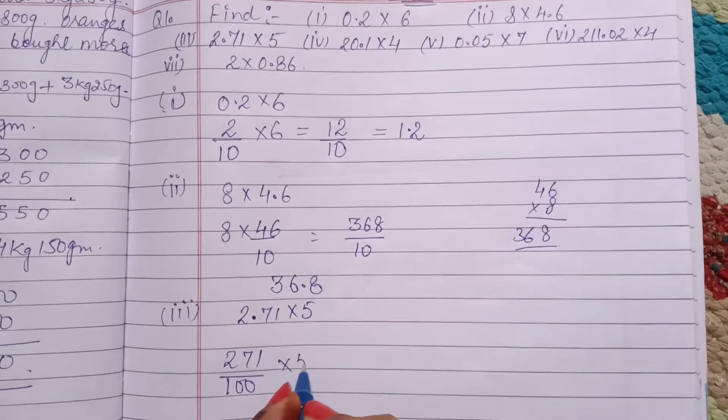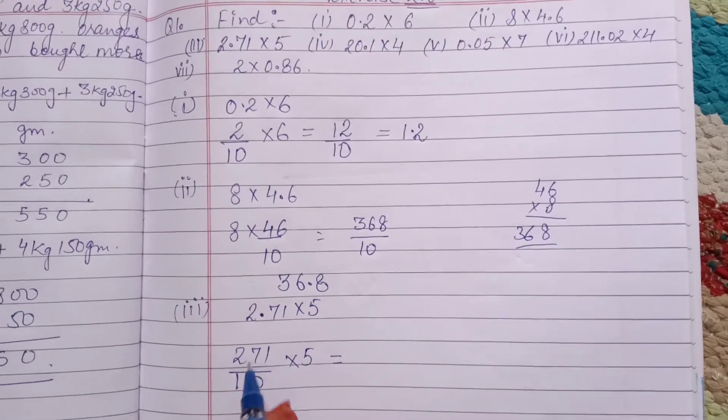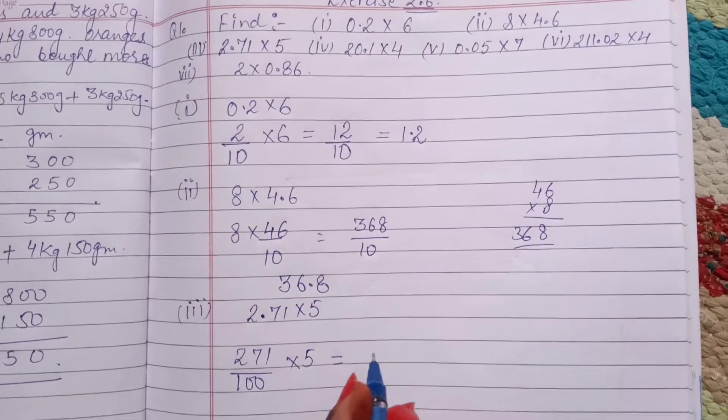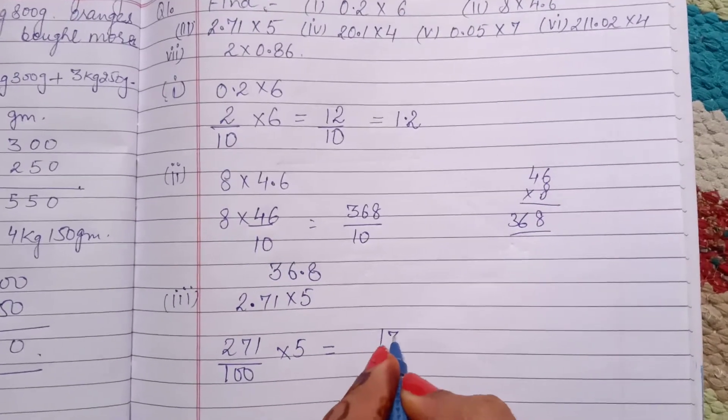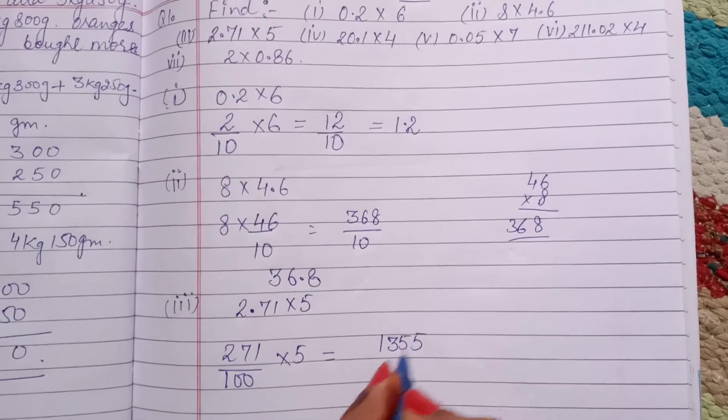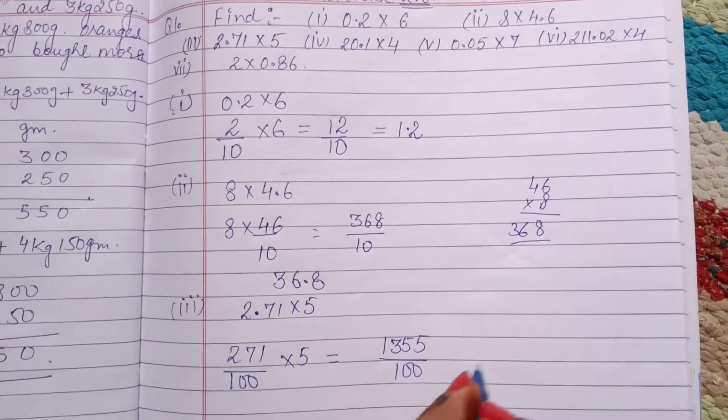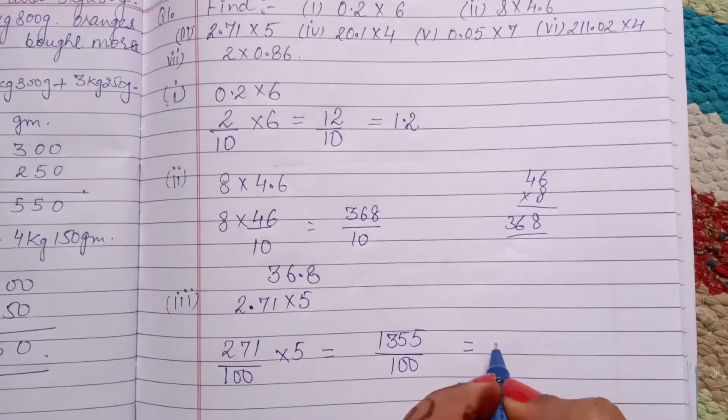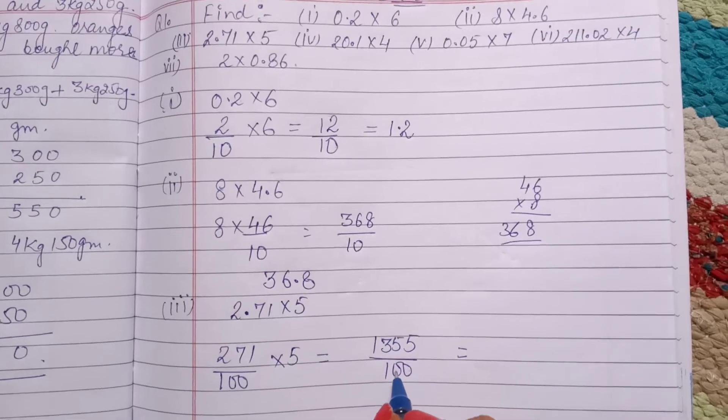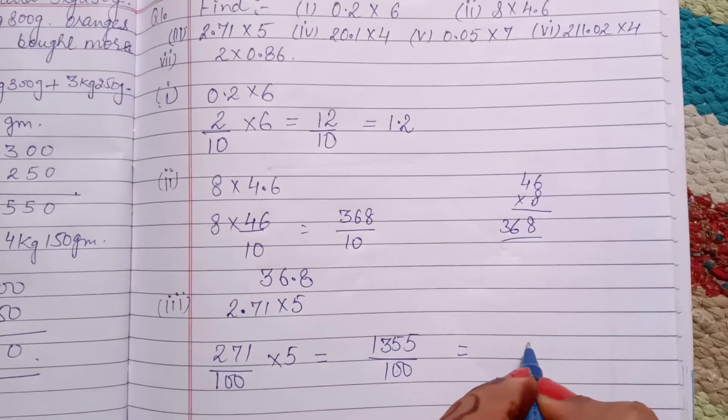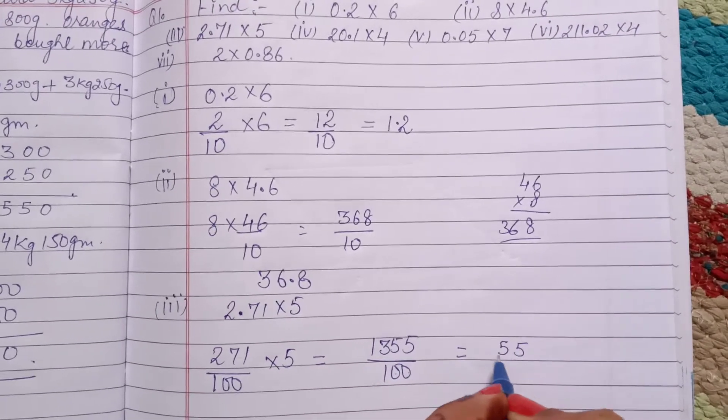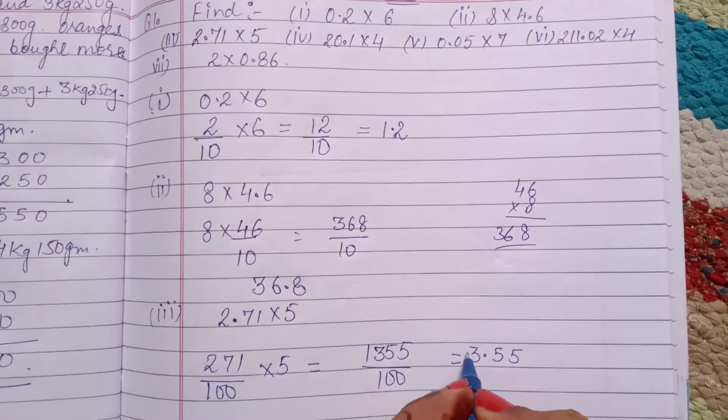Over 100 into 5, when we multiply 275, we get 1355 over 100. Then we can write, after 2 digits, put a decimal: 5, 5, then decimal, then 13. This is the answer of this.